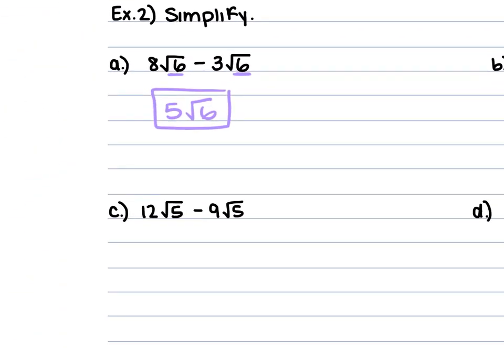For part C, we have 12 square root of 5 minus 9 square root of 5. Those square roots of 5 are the same, so we keep the square root of 5 and subtract: 12 minus 9 gives us 3 square root of 5.